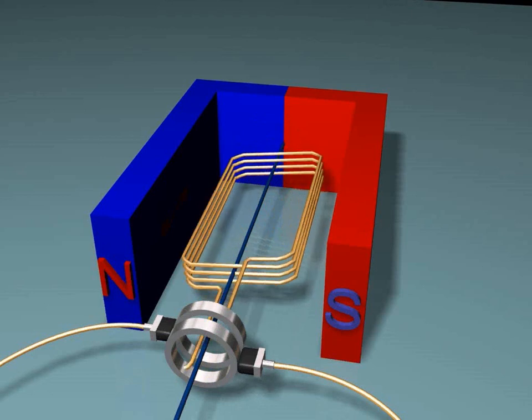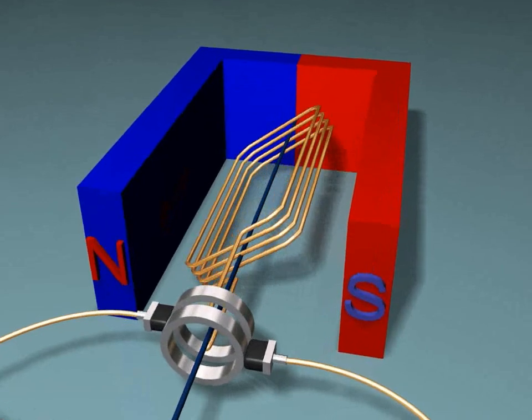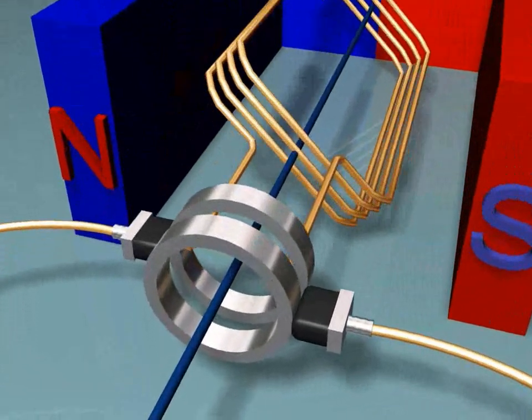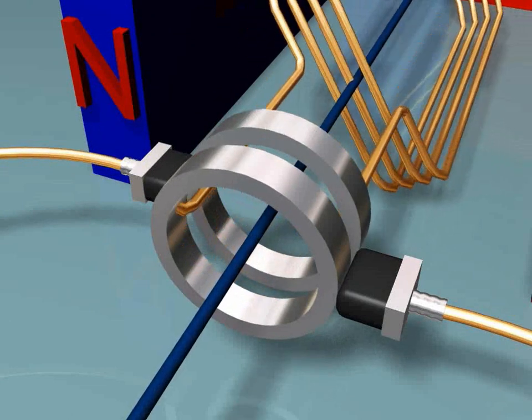We rotate the coil using hands or any other means of rotation. Each of the two ends of the coil is connected to a slip ring. So we have two separate slip rings that are not in touch with each other.